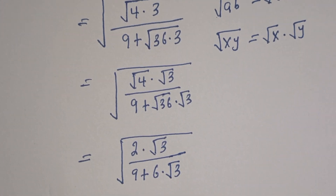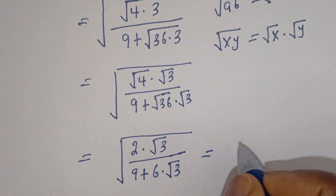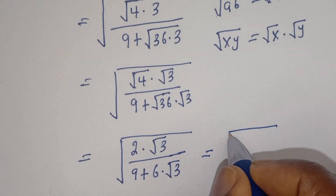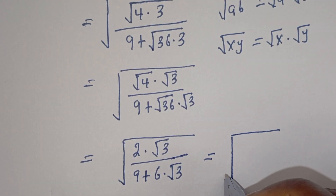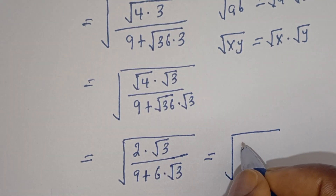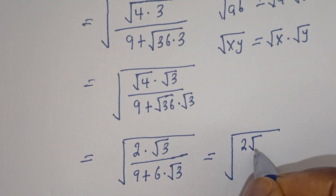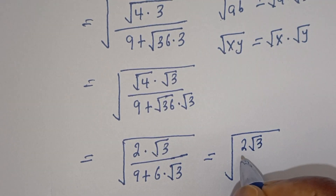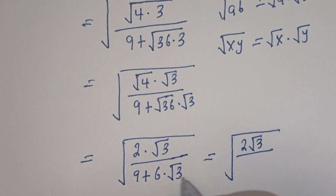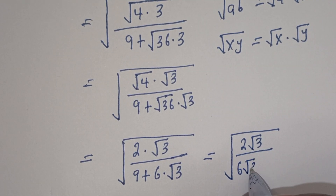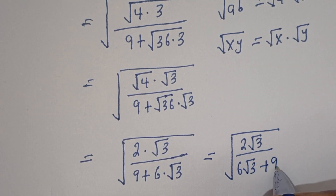Then this can be written as square root of 2 root 3 divided by 6 root 3 plus 9.